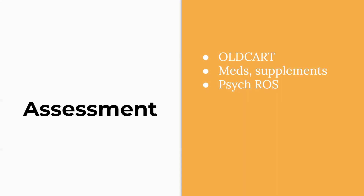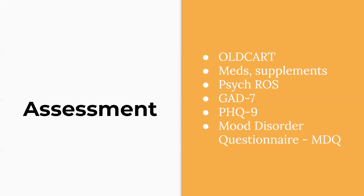For psychiatric ROS: do they have hallucinations — visual or auditory — suicidal ideation, homicidal ideation? Just ask all the questions. The GAD-7, the generalized anxiety disorder screener, is a great questionnaire — especially in the clinic setting it saves time and is also a good assessment tool to track where patients are before versus after treatment. The PHQ-9 is the patient health questionnaire about depression. And the mood disorder questionnaire, while not diagnostic for bipolar disorder, helps you determine whether they need further assessment and treatment.